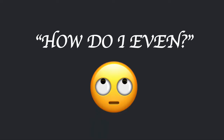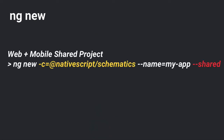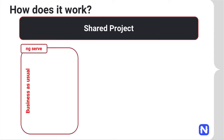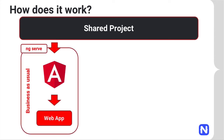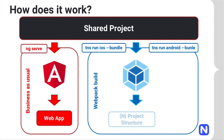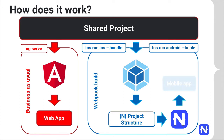We can use a schematic to generate a brand new shared project in a format we expect. This lets us run ng serve to use the Angular CLI to build a web app, or we can call TNS run iOS --bundle or Android --bundle. This will first run through webpack, which picks up all the shared files and the NativeScript-specific ones, recreates a NativeScript project structure in memory, and then uses the NativeScript build to actually build the application.